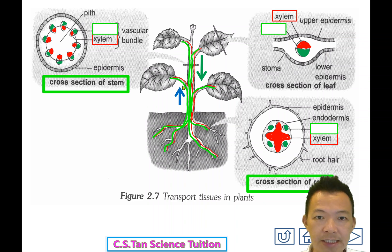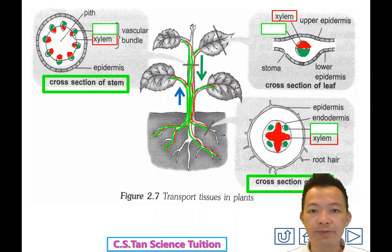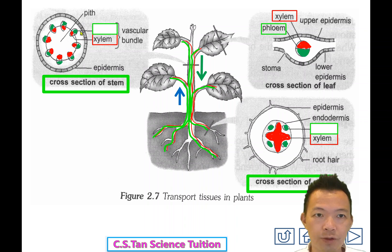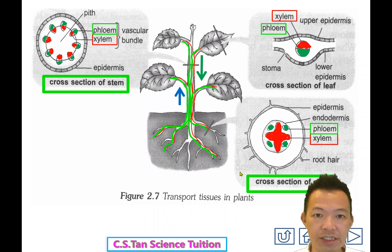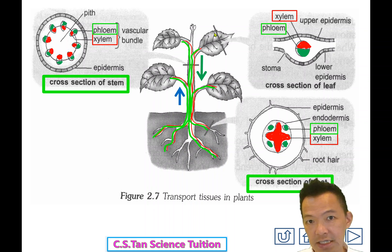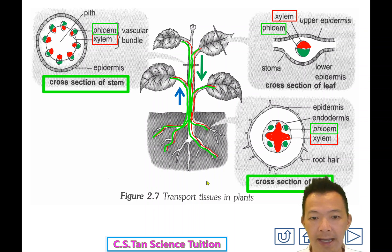The leaf gets the water, continues photosynthesis, and makes food. The food material is then transported downwards 被送下來了, passed through the phloem tissue. Phloem tissue is just under the xylem tissue in the leaf, and continues to flow through phloem in the stem and then phloem in the root. This is how water goes up and food material goes down.